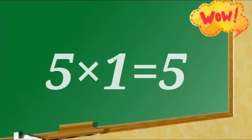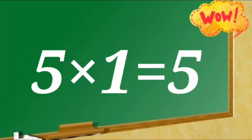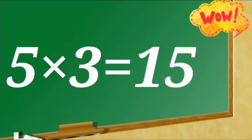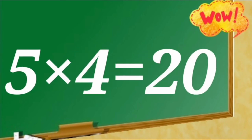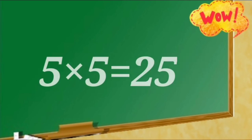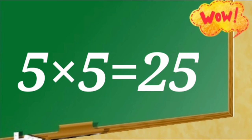Table of 5. 5 ones are 5, 5 twos are 10, 5 threes are 15, 5 fours are 20, 5 fives are 25.